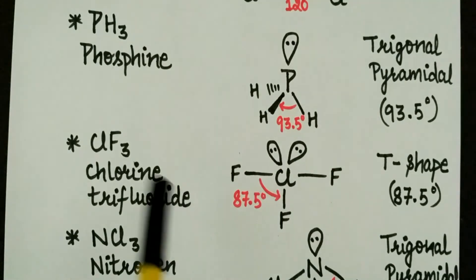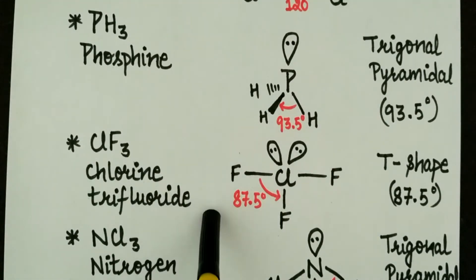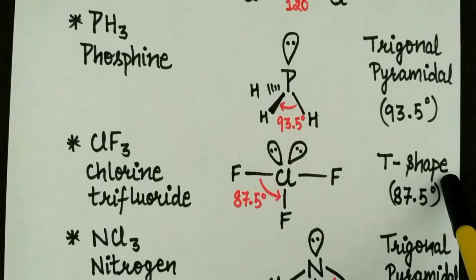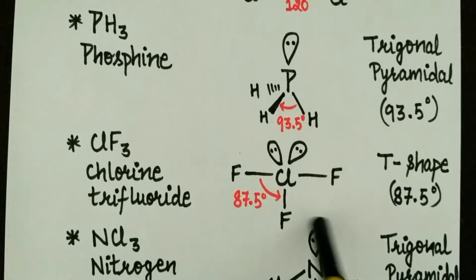Then for CLF3, its name is chlorine trifluoride. It has T-shaped structure and its angle is 87.5 degrees.